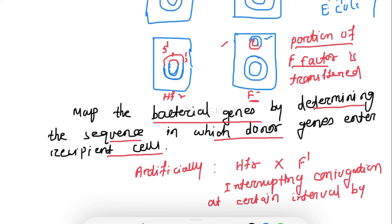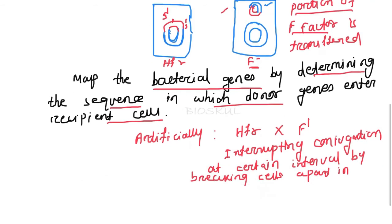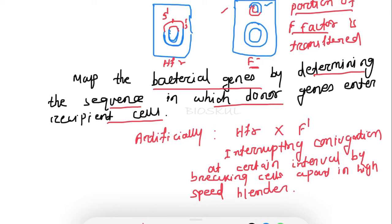Interrupt the conjugation at certain intervals of time by breaking the cells apart in a high-speed blender. For example, after 10 minutes, break the cells apart in a high-speed blender and find out the genes that were transferred from the donor to the recipient. Similarly do this after 20 minutes, after 30 minutes, and so on.